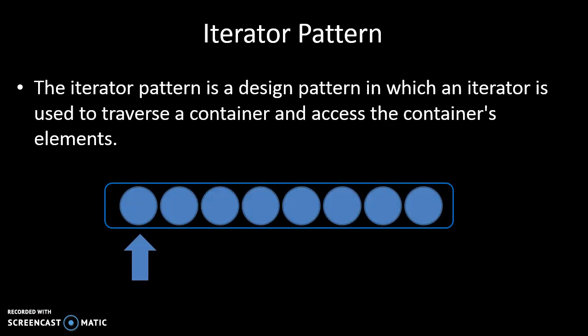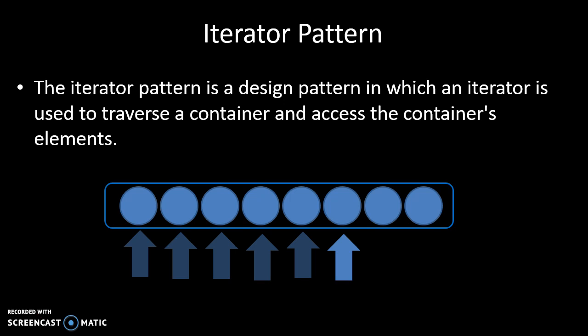The iterator pattern is a design pattern that allows you to go from the start to the end of a container that contains a bunch of elements. It could be an array, and we could be just visiting each element of the array. It could be visiting each element of a linked list, a set, or a complex structure of any kind, as long as it has a number of elements and our program wants to go from the start to the finish.